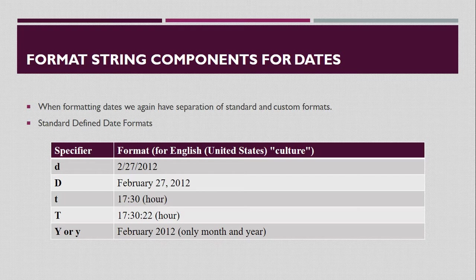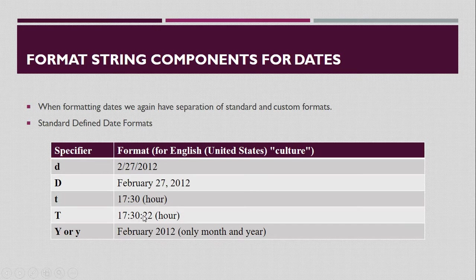Format string components for dates: lowercase d displays a short date, uppercase D displays the month, day, and year. Lowercase t displays the time in hours and minutes only, uppercase T displays hours, minutes, and seconds. Uppercase Y or lowercase y displays month and year.